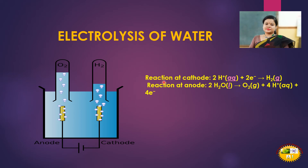Looking at the reactions: at the cathode, hydrogen ions (H⁺, positively charged) are attracted towards the negative electrode and liberate hydrogen gas. At the anode, O²⁻ ions (negatively charged) are attracted towards the positive electrode, and oxygen gas is liberated there. So, electrolysis of water generates hydrogen gas at the cathode and oxygen gas at the anode.